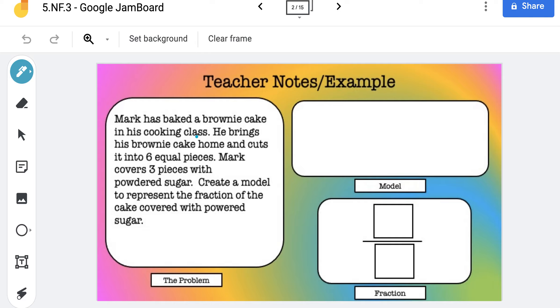All right, so let's underline the key parts. We know that Mark is bringing home a cake, and he cuts it into six equal pieces. So let's underline the six - there's gonna be six equal pieces. And then three of them are gonna have powdered sugar. All right, so let's underline the three pieces that are gonna have powdered sugar.